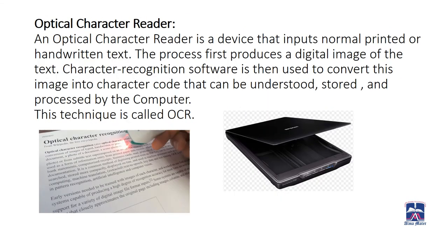Third, we have the optical character reader. An optical character reader is a device that inputs normal printed or handwritten text into a computer. This process first produces a digital image of the text. Character recognition software is then used to convert this image into character code that can be understood, stored, and processed by a computer. This technique is called OCR. A photocopier machine or a scanner also acts as an OCR.